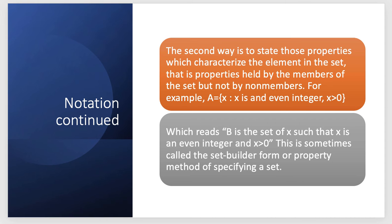The second way is to state those properties which characterize the elements in the set. That is, properties held by the members of the set but not by non-members. For example, here A = {x : x is an even integer, and the comma represents 'and'.